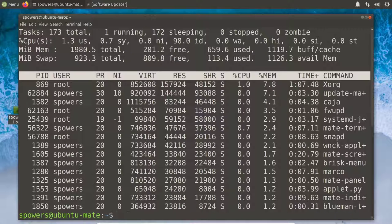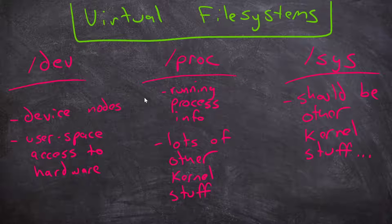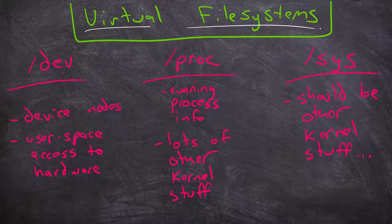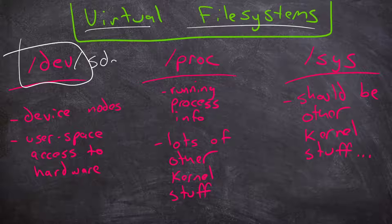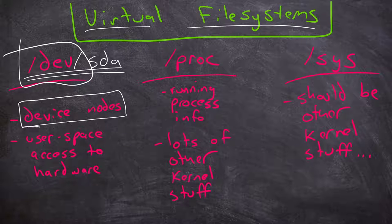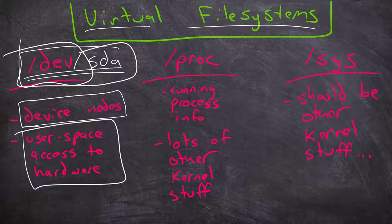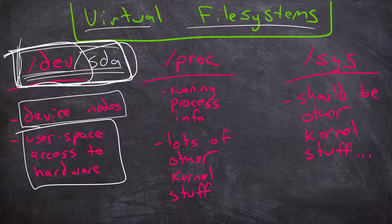Now that we understand processes and their process IDs, let's talk about virtual file systems. While we have a hard drive with physical files on it, there are also virtual file systems on a Linux system. One we've looked at before is the /dev file system. Things like /dev/sda for the first serial ATA hard drive are not actual files — they are device nodes. Linux interacts with things as if they are files, using this virtual file system.